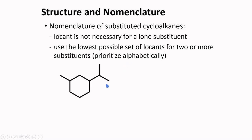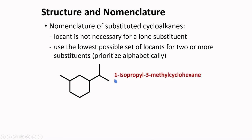A locant is not necessary if there is only one substituent — for example, ethylcyclobutane or methylcyclohexane. For a compound with an isopropyl group and a methyl group on a cyclohexane ring, alphabetical priority places 'i' before 'm', so the isopropyl group is at position 1 and the methyl group at position 3. The correct name is 1-isopropyl-3-methylcyclohexane.